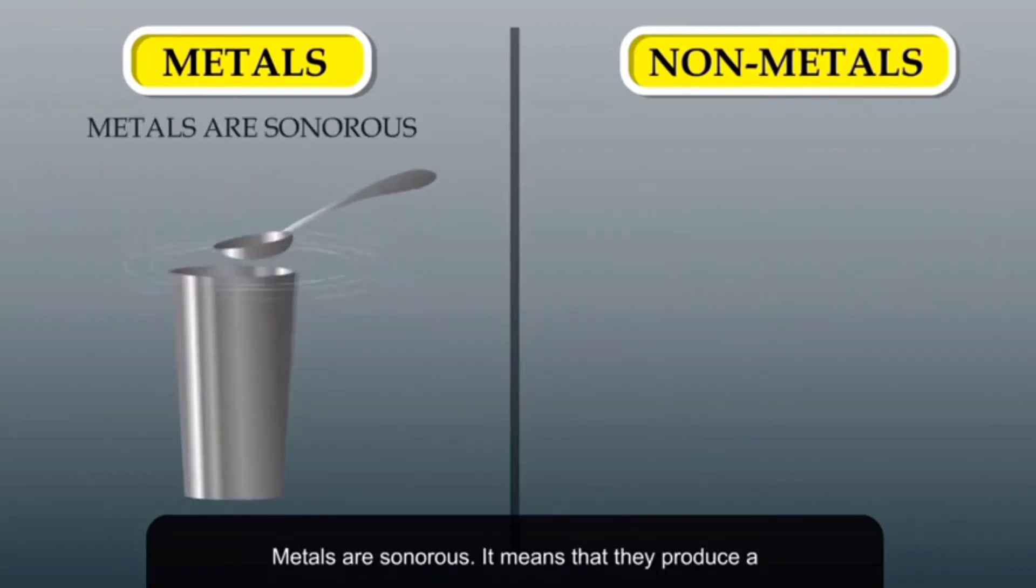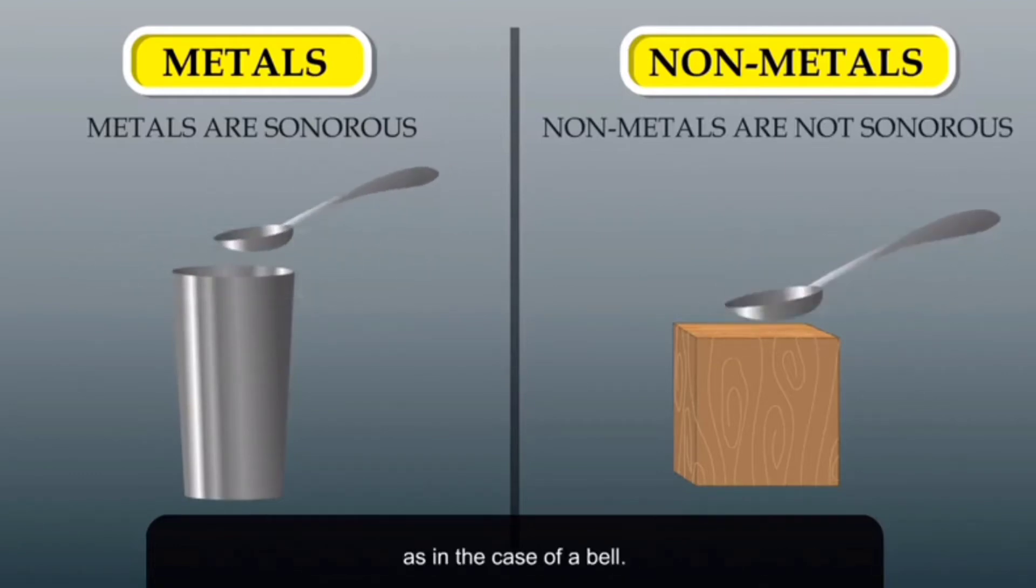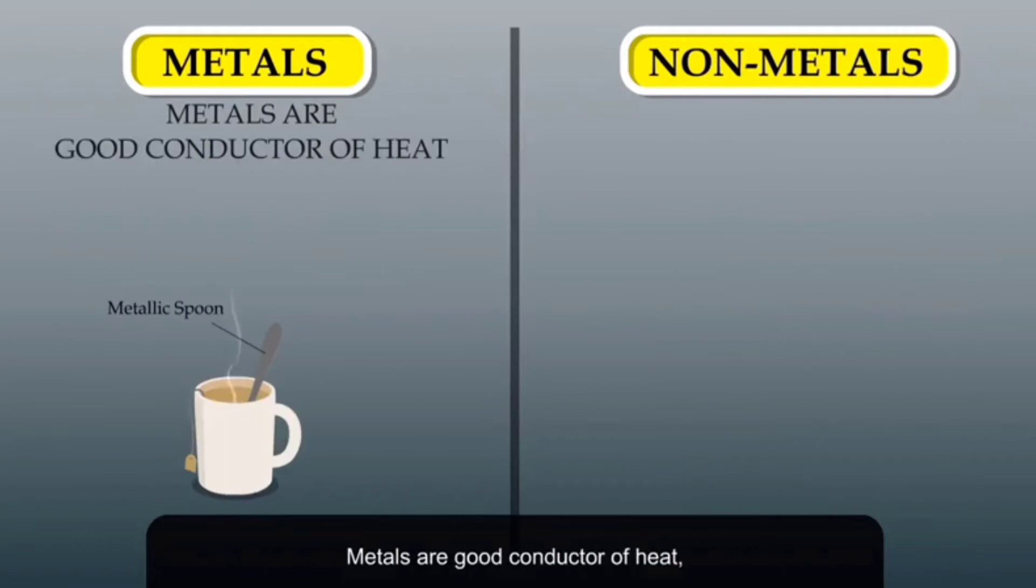Metals are sonorous, which means they produce a ringing sound when struck with a hard object. Non-metals are not sonorous; they do not produce ringing sound, as in the case of a bell.